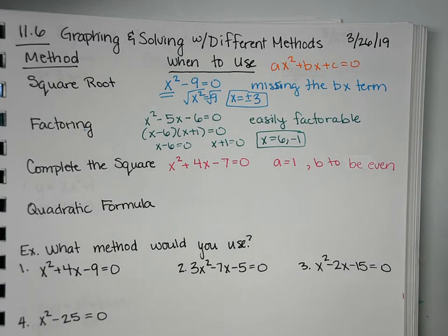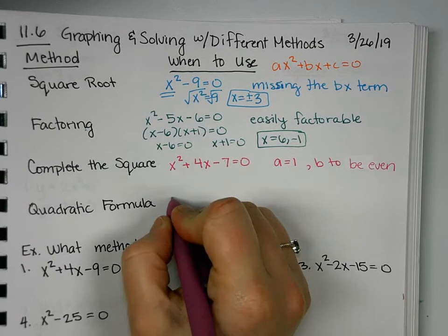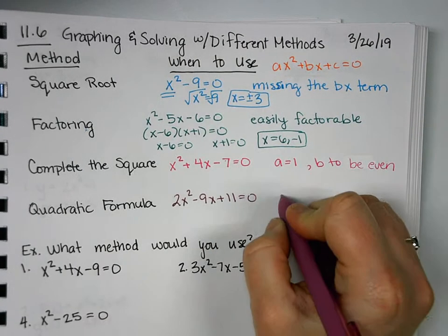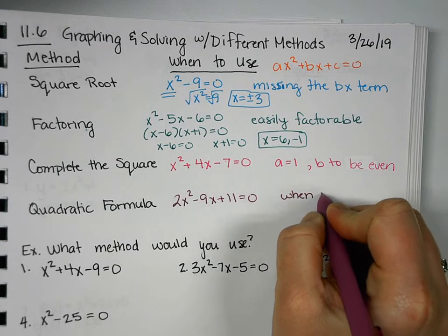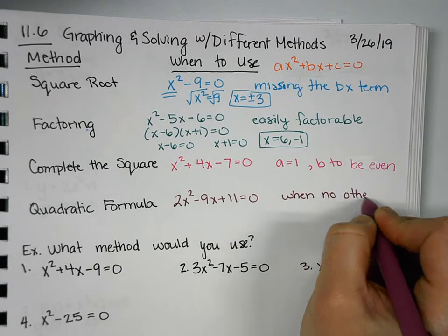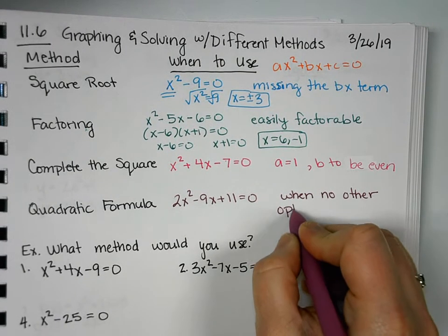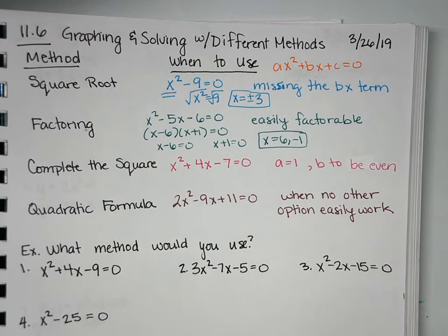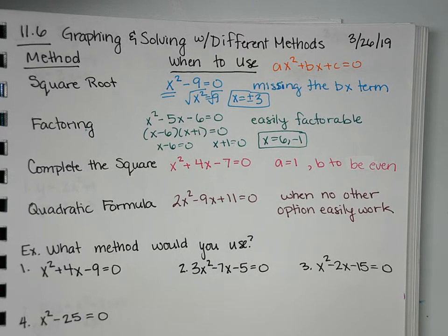And then the last one, quadratic formula. Use this when no other option is available or easily works. And that's just because quadratic formula does take a little more time. It'll get you your answer, but it's just a formula you have to memorize, and there's a lot of simplifying you have to do. So we tend to use it on the ones that can't factor, completing the square is not easy, and can't be done by square roots. Then you do quadratic formula.